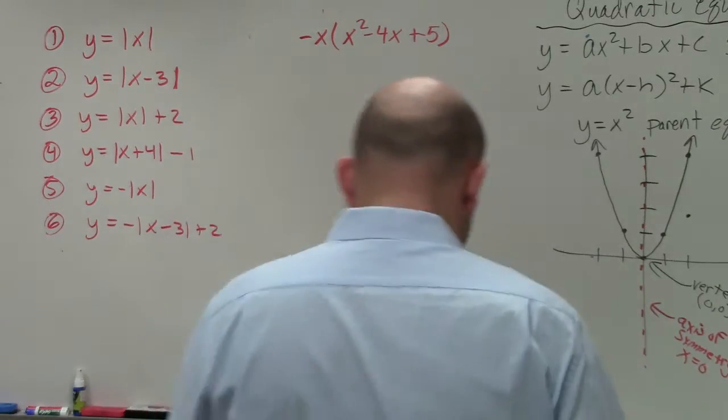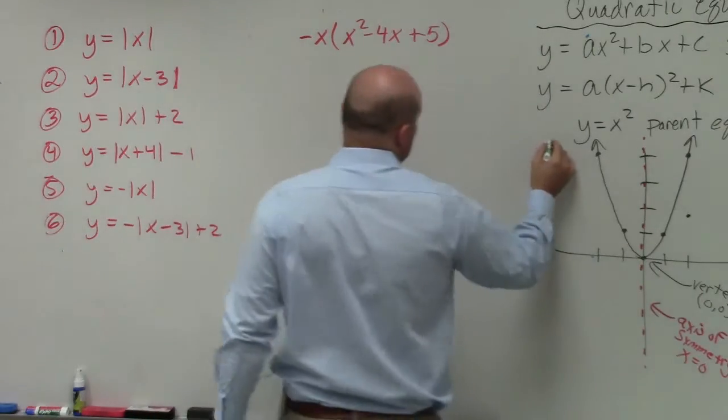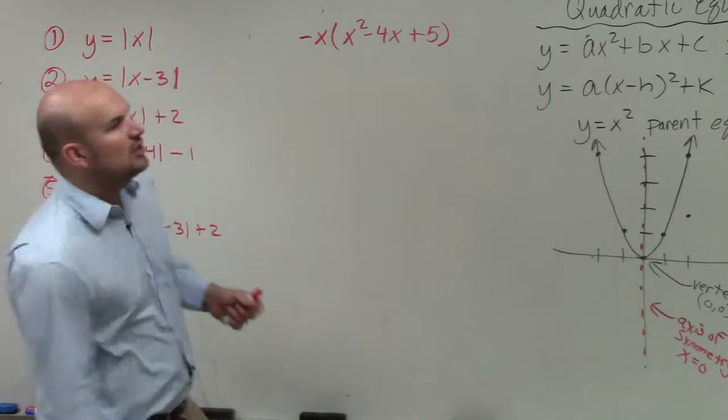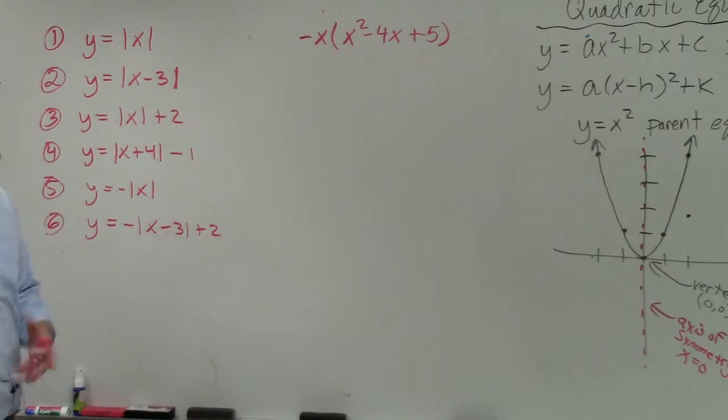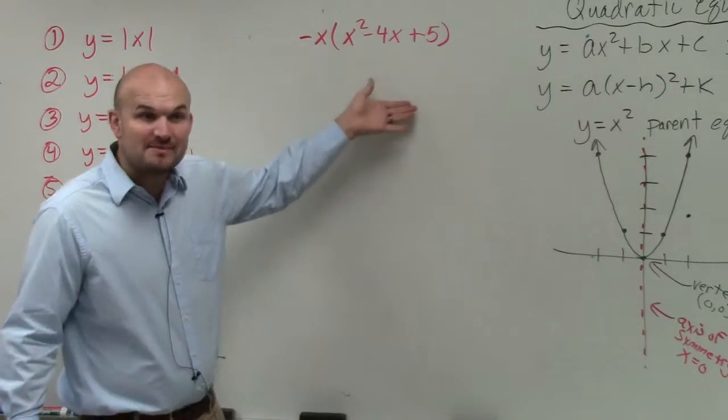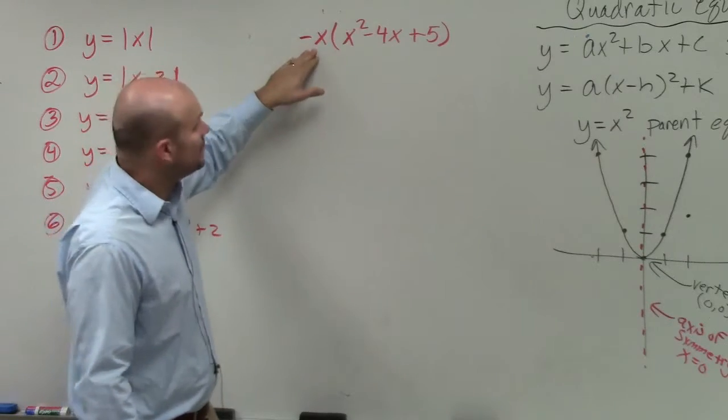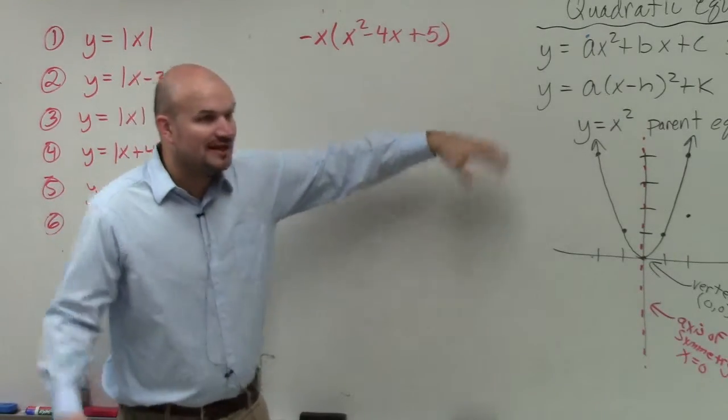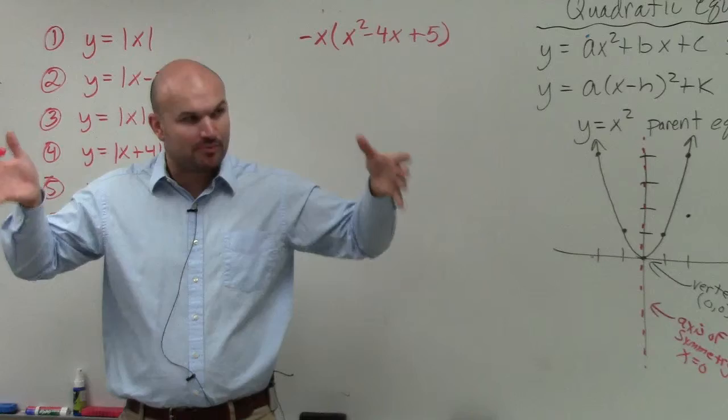So when doing a problem like this, the main important thing I want you guys to understand is now we are not multiplying a binomial. Now we're multiplying a monomial times an expression, and that expression is being grouped by parentheses.